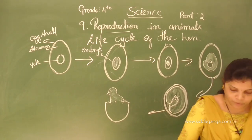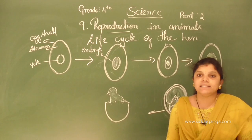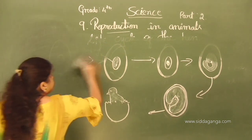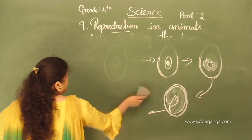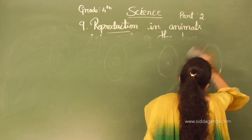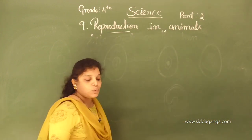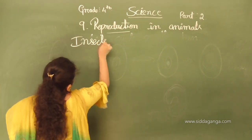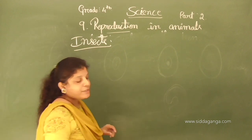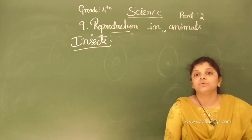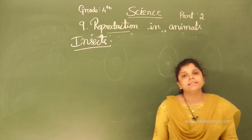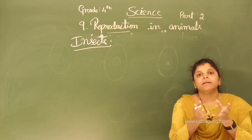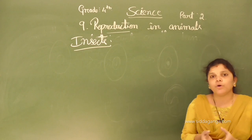Next, we are going to learn about insects. Have you seen insects? We can see different types of insects in our surroundings: butterfly, honeybee, mosquito, cockroach, grasshopper. These are all insects. Insects also lay eggs. The baby insect that comes out is not similar to the parent.